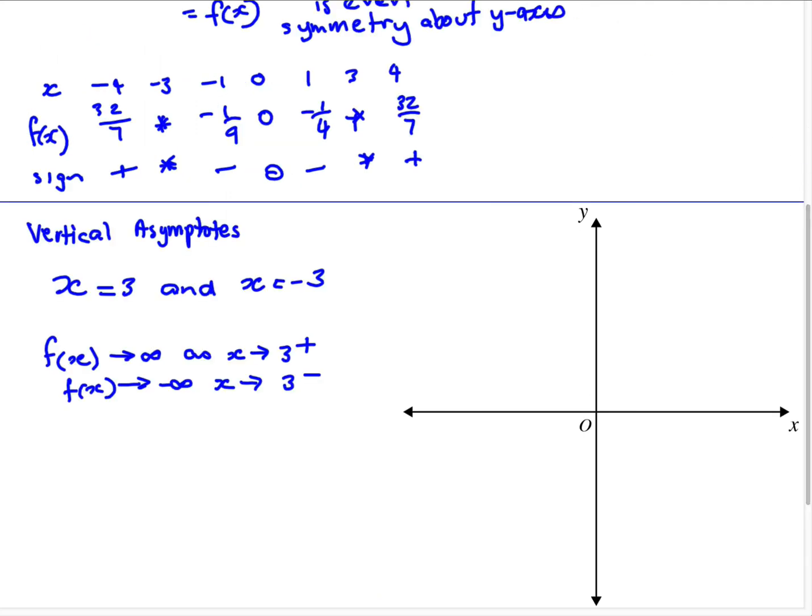So how did we get that from the table of values? So let's just go back up. If we're looking at x is 3, as we're coming to 3, the sign is positive. So from the positive direction, the sign is positive. From the negative direction, the sign is negative. That's what I've done there.